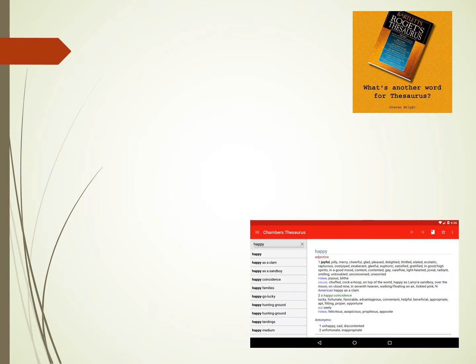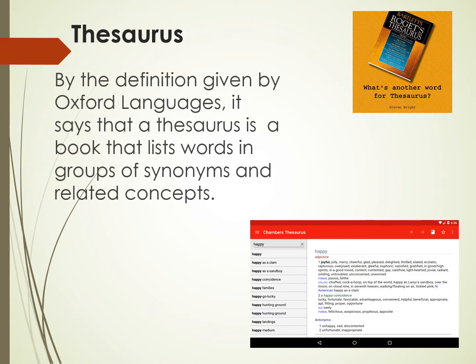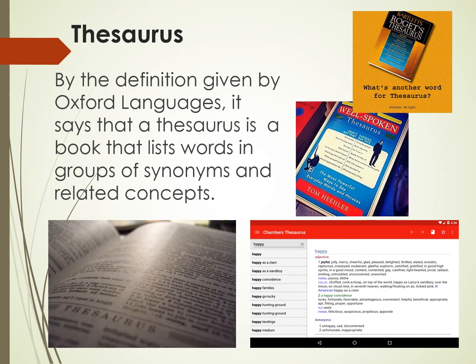What about a thesaurus? By the definition given by Oxford Languages, a thesaurus is a book that lists words in groups of synonyms and related concepts.